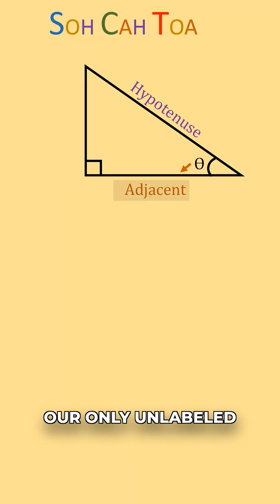And then our only unlabeled side, we would call our opposite side. And we can think of it as the side that is opposite of our angle theta. It's not touching theta. It's directly on the opposite side of the triangle.